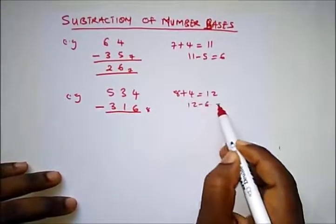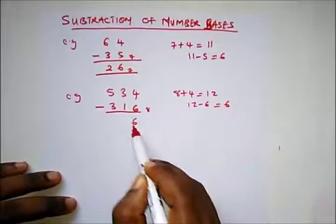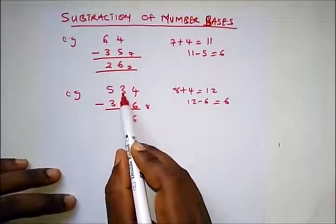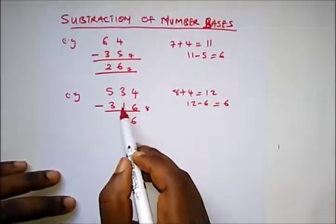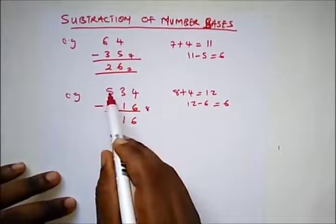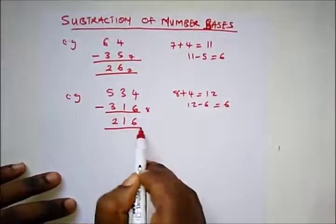So this will be a 6. What's remaining here? That is 2. 2 minus 1 gives us 1, and 5 minus 3 will give us 2.